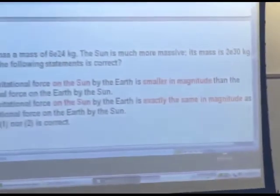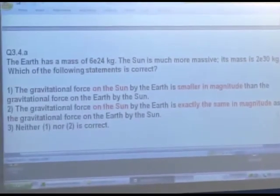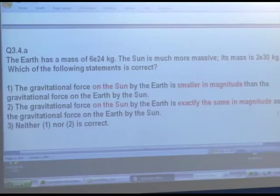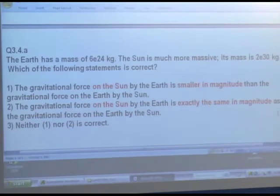So the Sun has a mass of about 2 times 10 to the 30th kilograms. The Earth has a mass of about 6 times 10 to the 24th kilograms. So the Earth is a lot less massive. What is true about the magnitude of the gravitational force here?